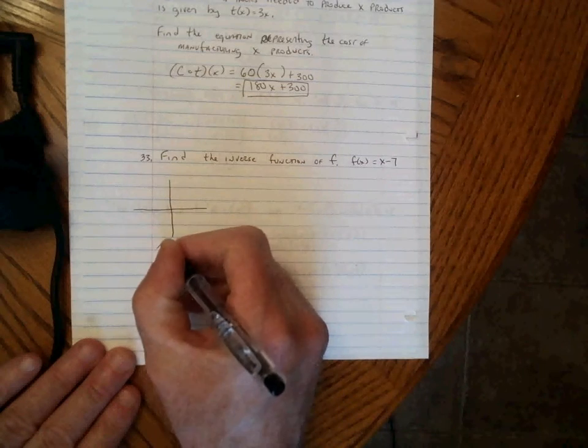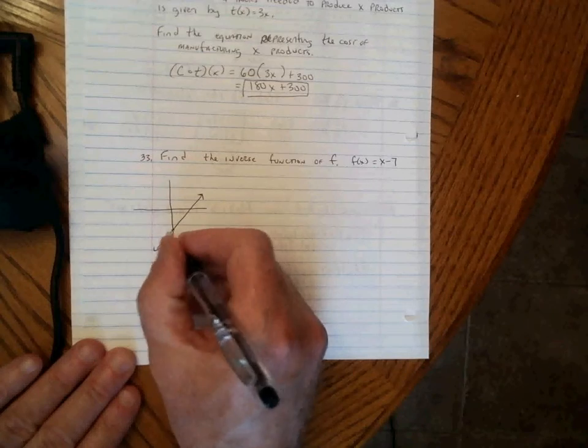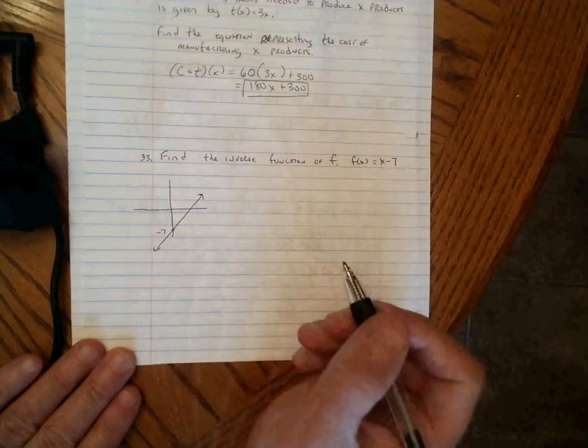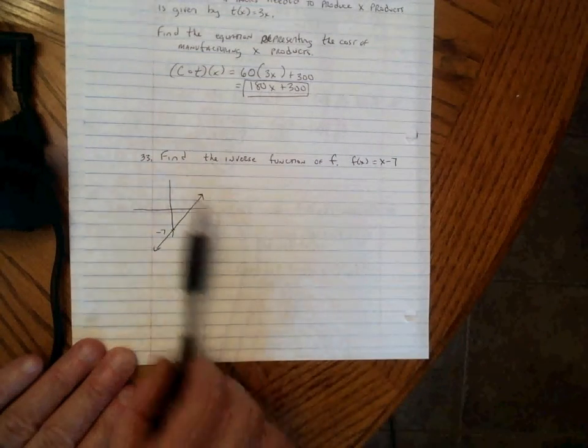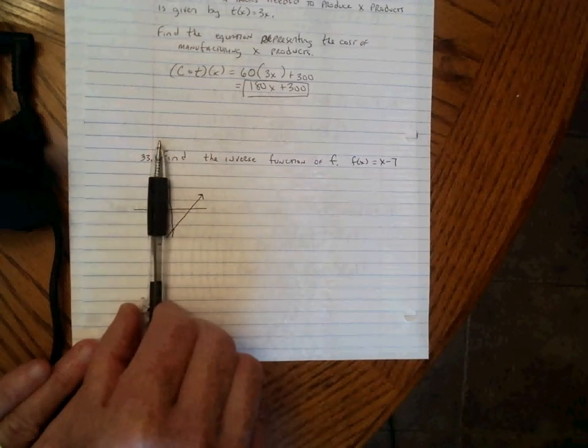This is going to be the graph of Y equals X minus 7. It's going to look like this, where it intersects the Y axis at negative 7. And we said if it passes a vertical line test, anywhere we lay a vertical line, we can only intersect one time. That's true of any function.